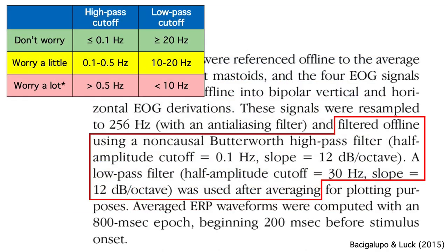When you're reading an ERP paper, one of the first things you should look at is the filter settings. If they're in the red range, the filters may have distorted the data so badly that the conclusions are invalid — not necessarily, but it's definitely something you'd want to be concerned about.